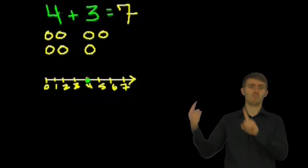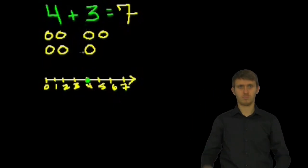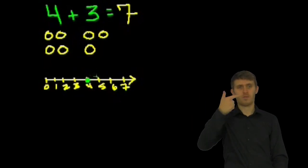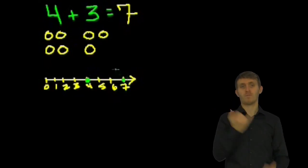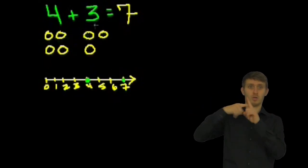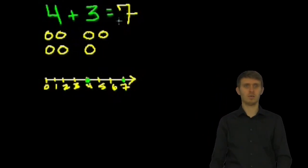So you could think about this as saying, well, we're on the number line. We start at the number 4, right? That's this number 4. And we're adding 3 to it. So we'll increase along the number line by 3. So we'll go 1, 2, 3. And you end up at 7.